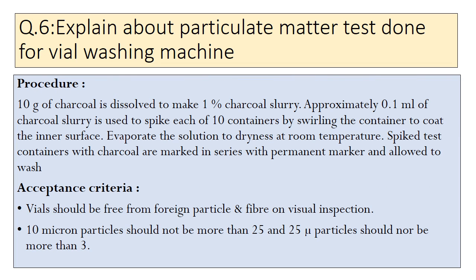The next question is: explain the particulate matter test done for the vial washing machine. In the procedure, 10 grams of charcoal is dissolved to make a 1% charcoal slurry. From this slurry, approximately 0.1 ml is used to spike each of 10 containers by swirling to coat the inner surface. Evaporation of the solution is done to dryness at room temperature. Spiked containers with charcoal are marked in series with a permanent marker and allowed to wash. Acceptance criteria: vials after washing should be free from foreign particles and fibre on visual inspection; 10-micron particles should not be more than 25, and 25-micron particles should not be more than 3.